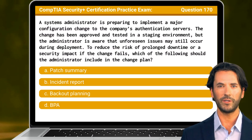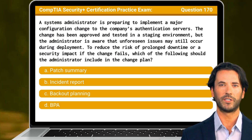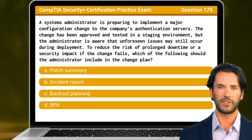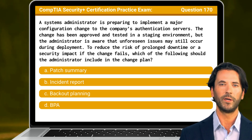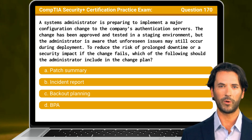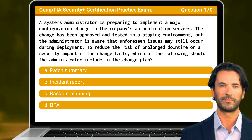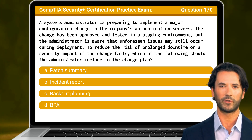Question 170. A systems administrator is preparing to implement a major configuration change to the company's authentication servers. The change has been approved and tested in a staging environment, but the administrator is aware that unforeseen issues may still occur during deployment. To reduce the risk of prolonged downtime or a security impact if the change fails, which of the following should the administrator include in the change plan? The answer is C.